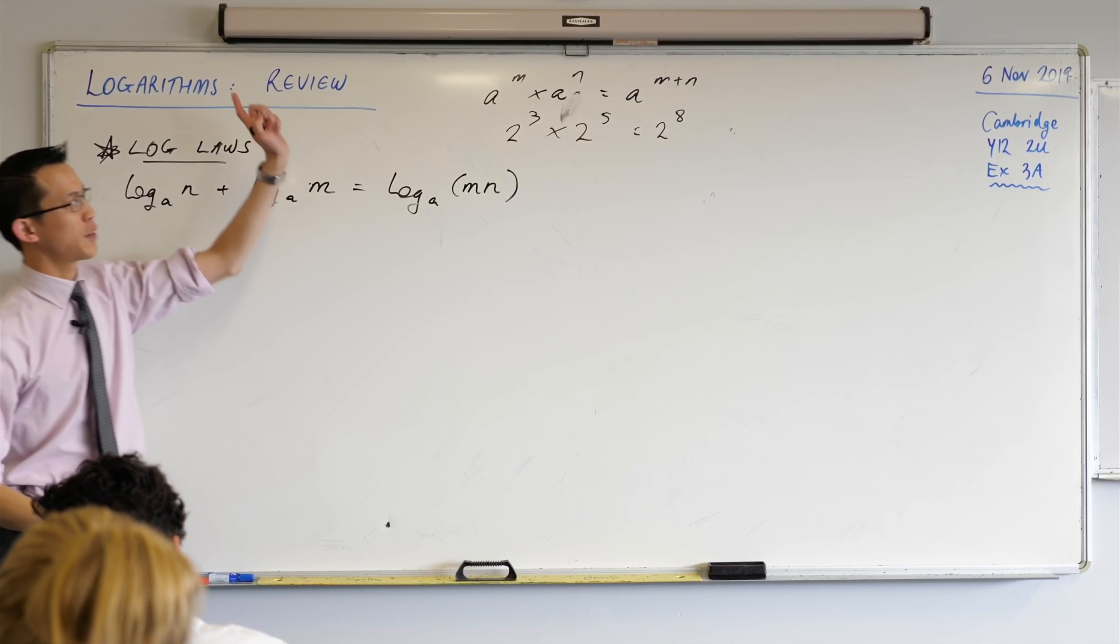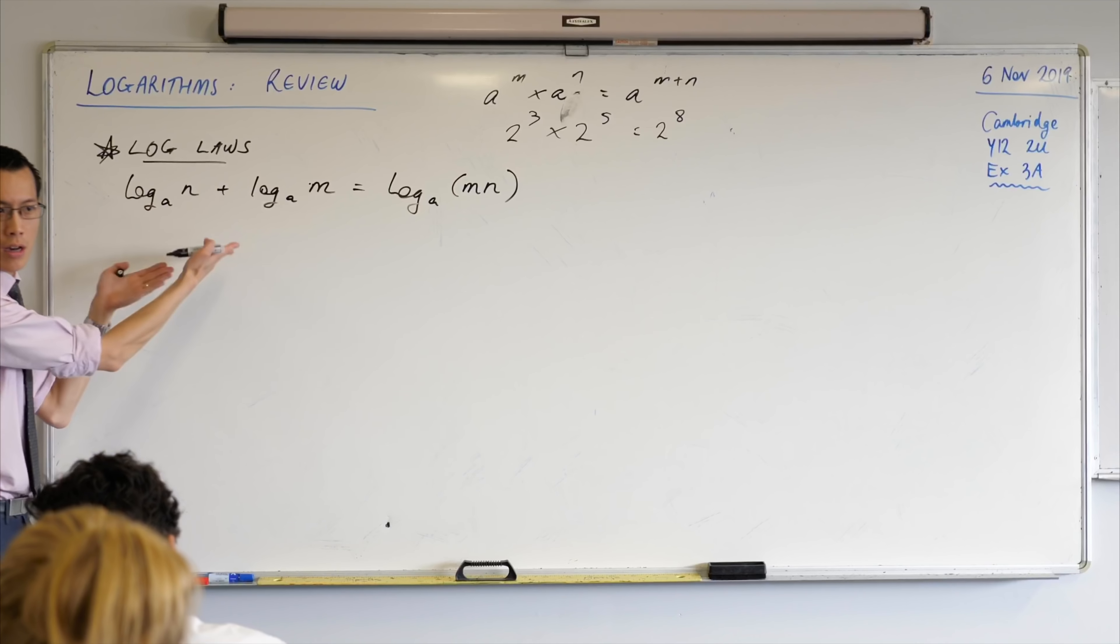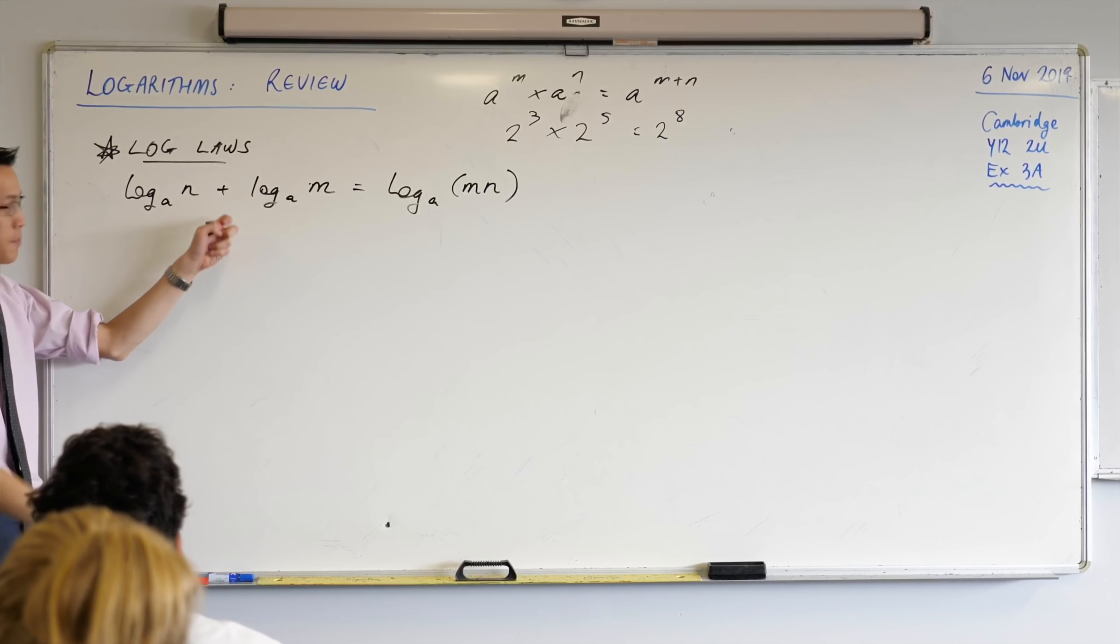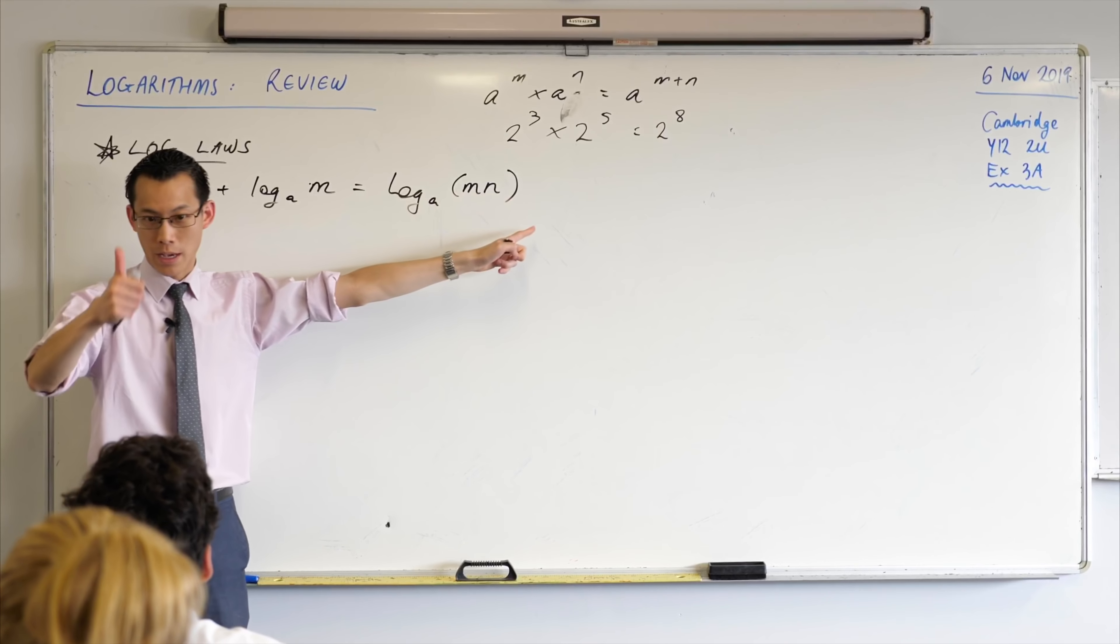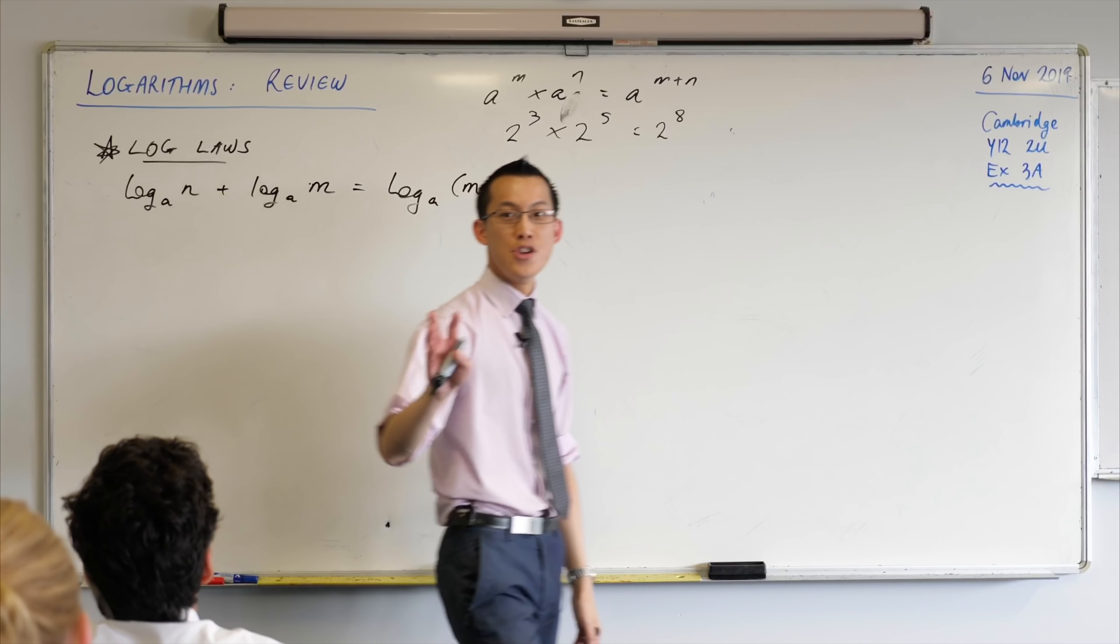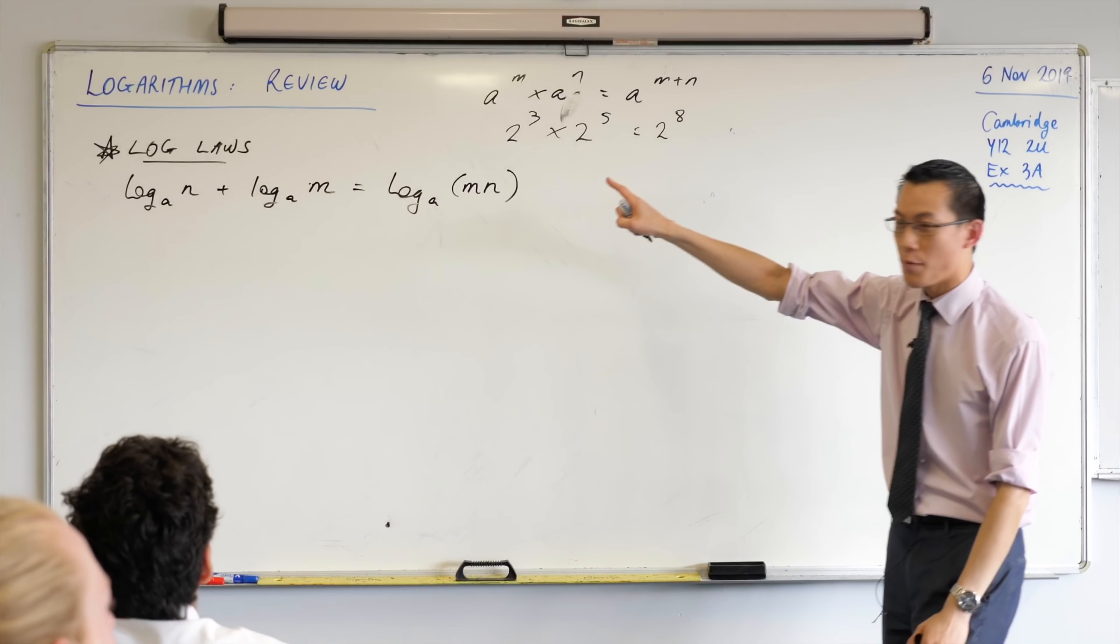When you're multiplying powers, or I should say when you're multiplying numbers with the same base and different powers, you add the powers, right? Logs are exponentials in reverse. So instead of multiplication turning into addition, what do you see here? What are the operations? Addition turns into multiplication. Happy? Okay, good.